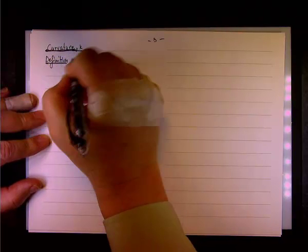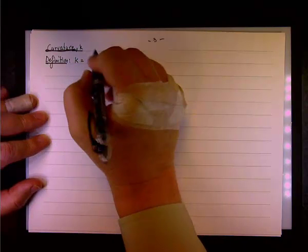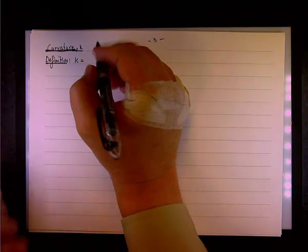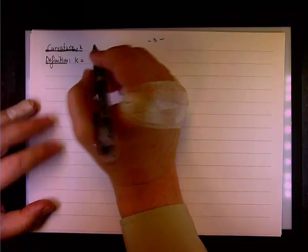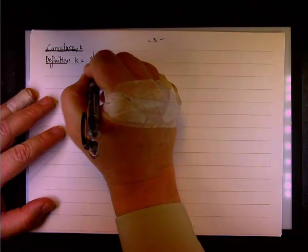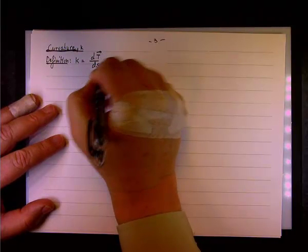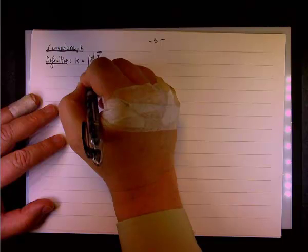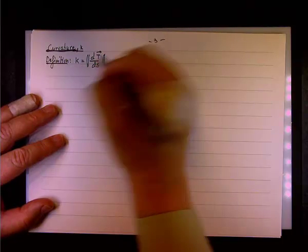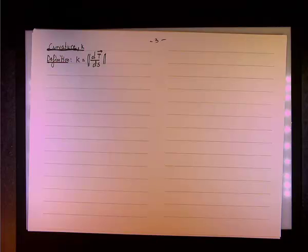The definition of the curvature K is dT/dS, and since dT/dS is a vector, then we'll take the magnitude. So the curvature is a scalar, the dT/dS is a vector, and do you remember what the T with uppercase stands for?